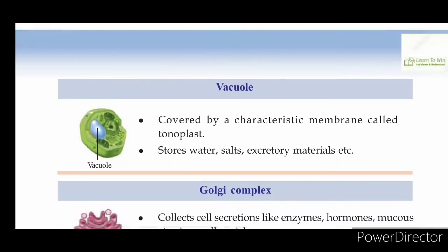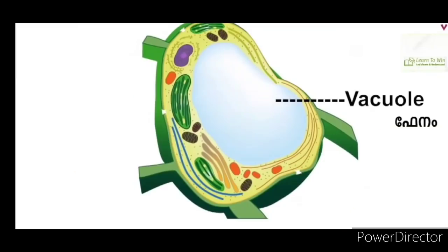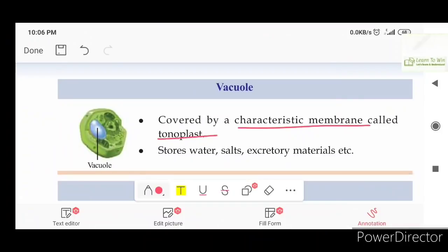Next is the vacuole. The vacuole is covered by a characteristic membrane called the tonoplast. This is the vacuole — it is used in plant cells. The vacuole stores water, salts, and excretory materials.